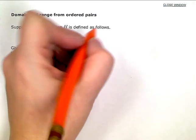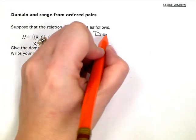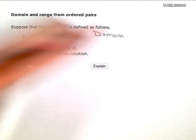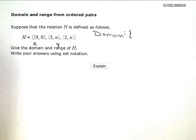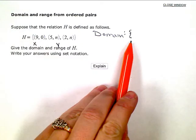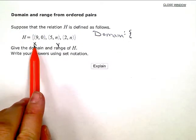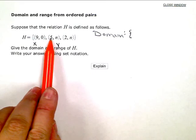So for the domain, and they asked me to use set notation, so that means when I list my values, I'm going to open and close with these curly braces. So again, domain is the X values, so I have 9, 5, and 2.